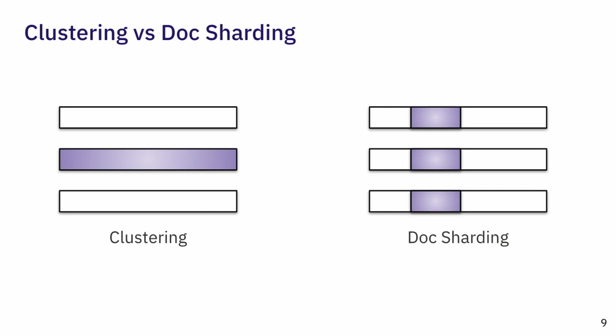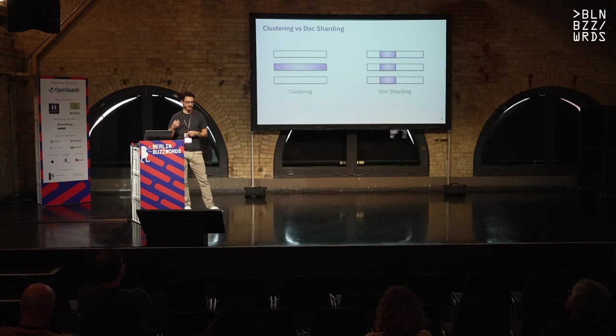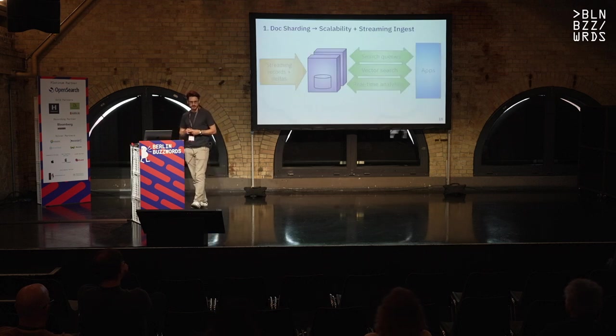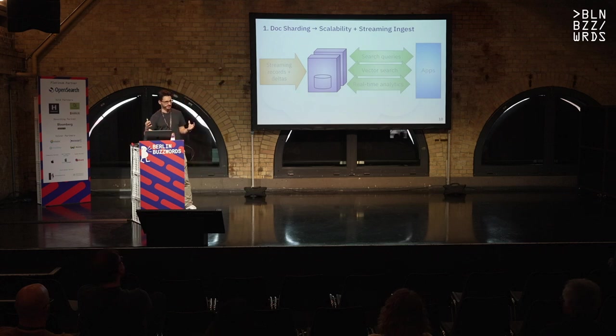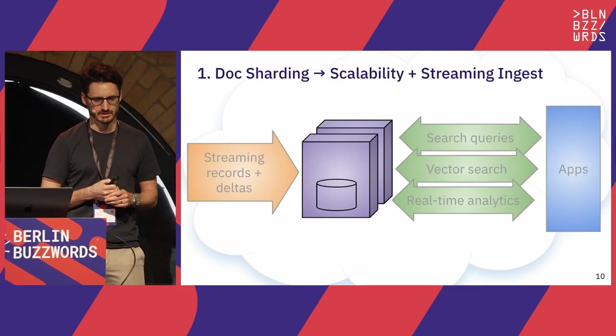To illustrate the IO point: with clustering key sharding, a query with a predicate on the clustering key goes to a single shard and reads data in one big IO. With doc sharding, your query has to go to all shards. You're reading the same amount of data from your storage device, but your number of read IOs is bigger and each read IO is smaller. That's a problem we'll have to solve later. Doc sharding gives us scalability with multiple machines and also very efficient streaming ingest with no cross-shard communication.